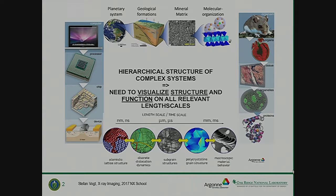Why do we need x-ray imaging? You can see applications from many different fields — geoscience, bioscience, material science, and even semiconductor manufacturing. These different fields have different techniques and different structures that we need to look at. We want to look at all these things with the same technique if we can. Fortunately, x-ray can do this.